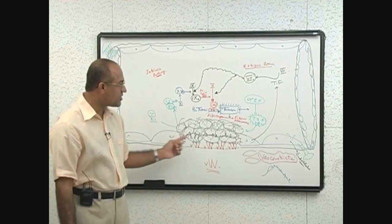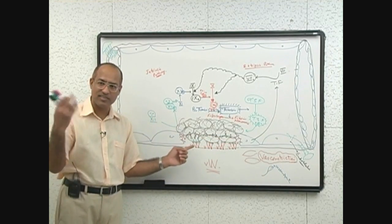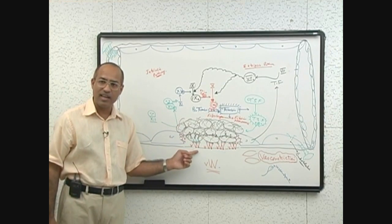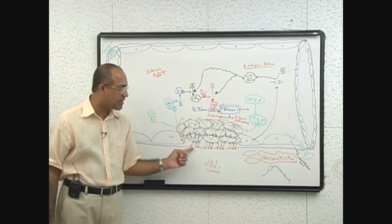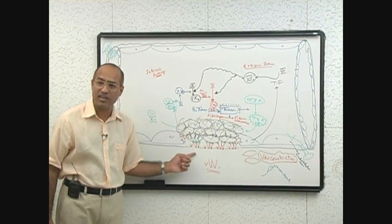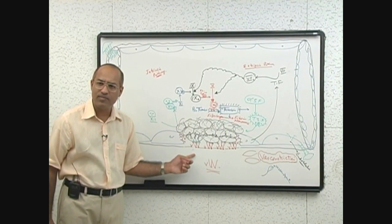When endothelium is injured, it starts producing which factor? Von Willebrand factor. Von Willebrand factor helps the platelet stick to the non-platelet surface. That is platelet adherence.